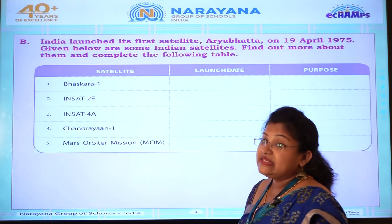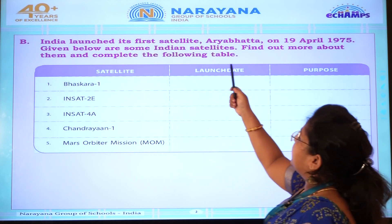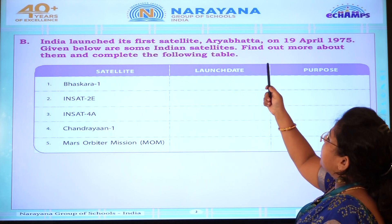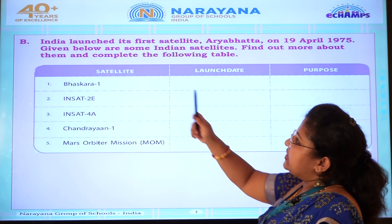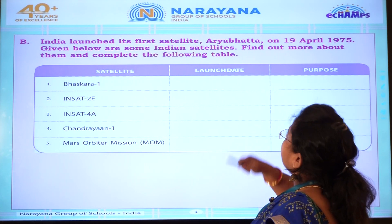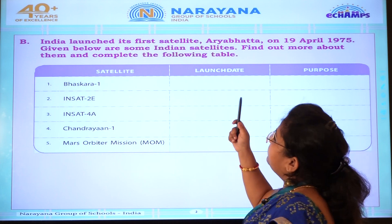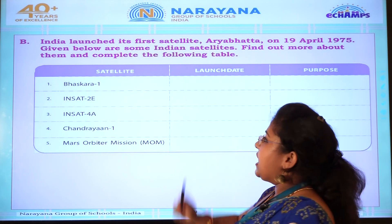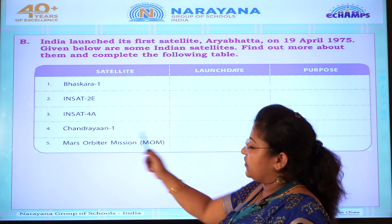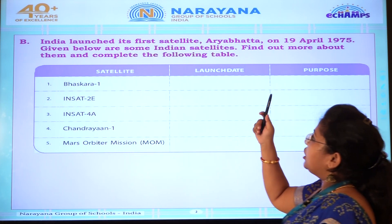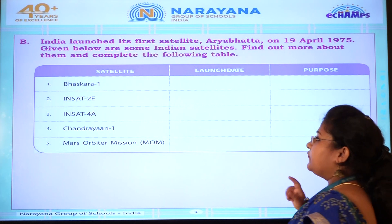In the next page: India launched its first satellite, Aryabhata, on 19th April 1975. Given below are some Indian satellites — find out more about them and complete the following table. There is a table with satellite name, launch date, and purpose. We will see, children.